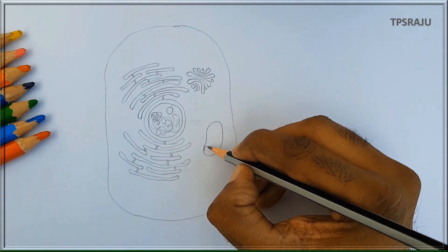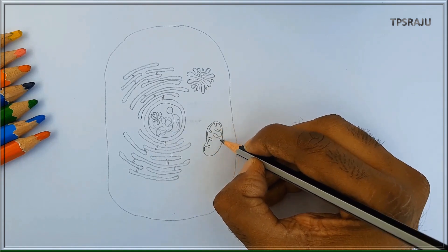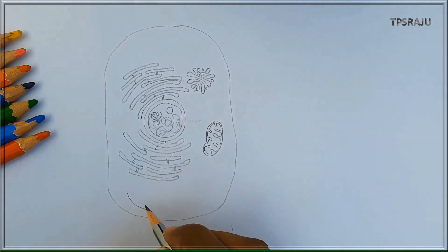There are some spherical or cylindrical shaped energy releasing organelles present in the cell called mitochondria.